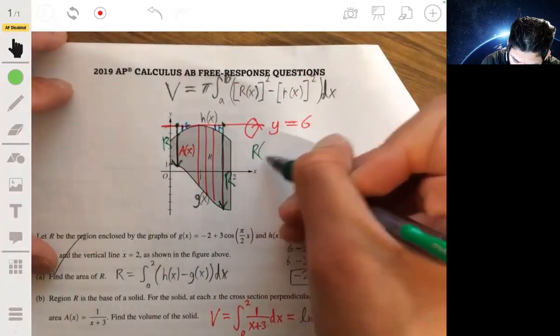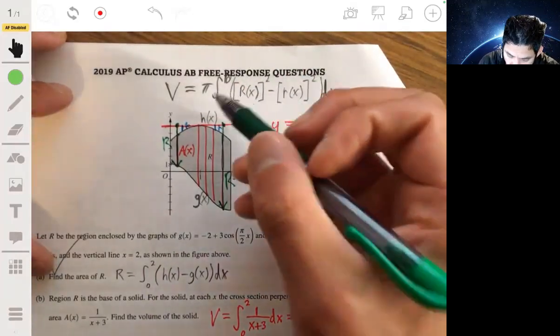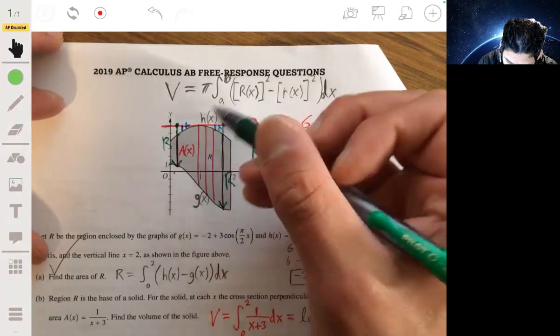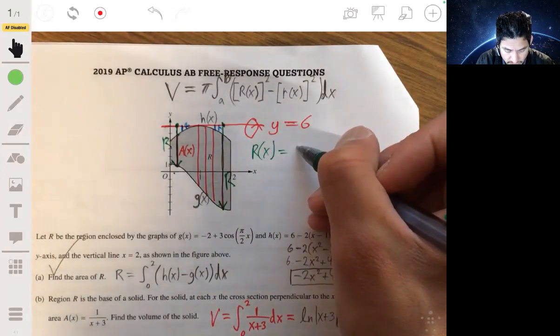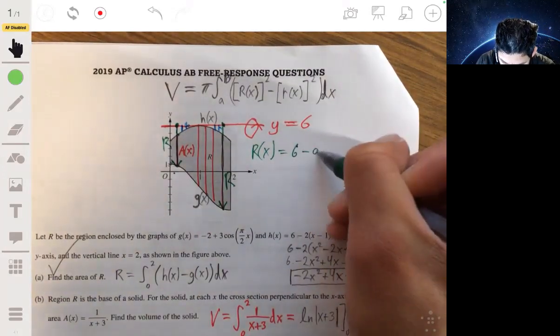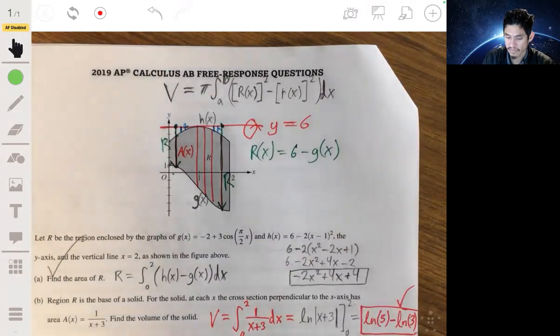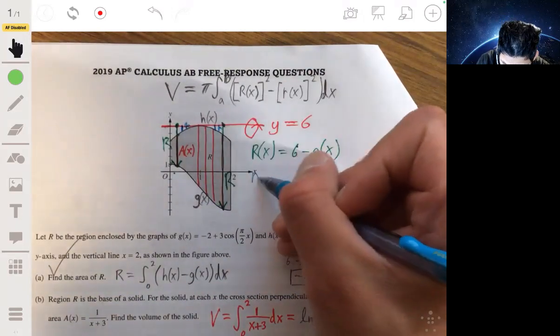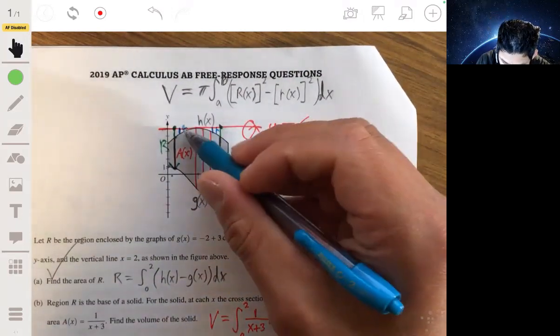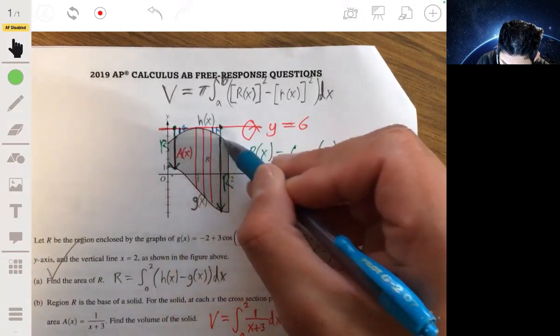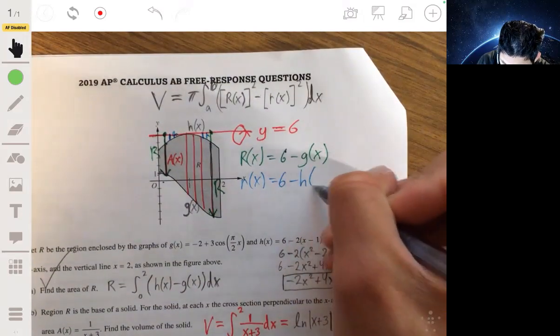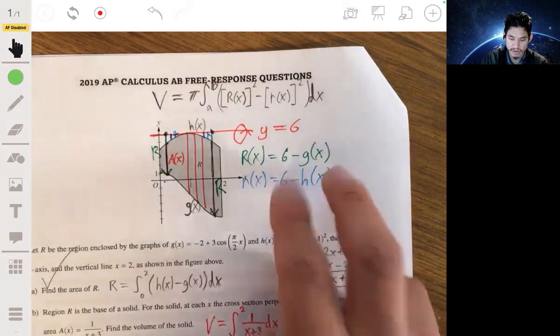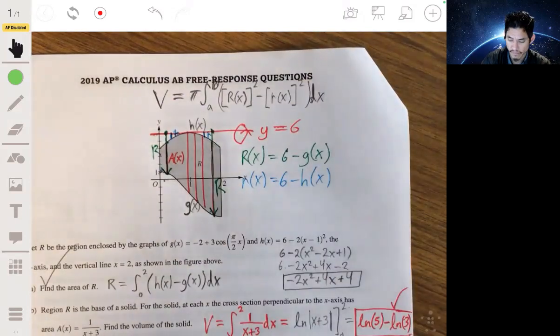Now, the equation for large r(x) here would be 6 - g(x). And the equation for the small r(x) would be 6 - h(x). And then from there, you just put those in there.